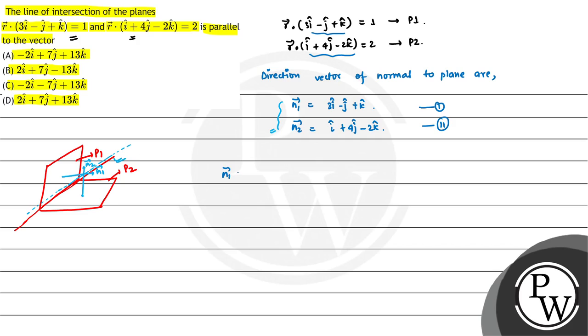So n1 cross n2 is parallel to the line of intersection.